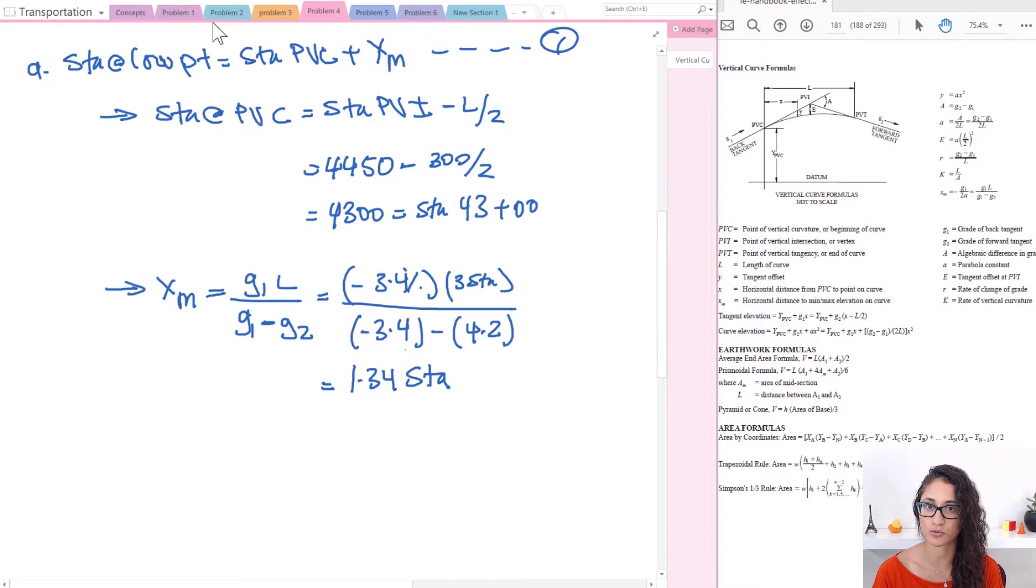So if we go back to the first equation we can just plug in our numbers. We have the station at the lowest point equals the station at PVC which was 4,300 plus 134. So if you plug in this answer you will get 4,434 which also equals 44 plus 34 stations. So that is your answer.